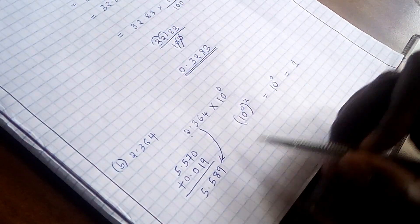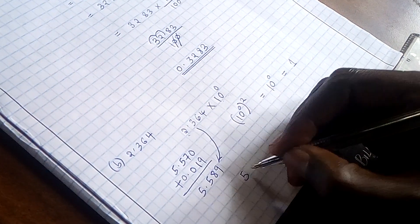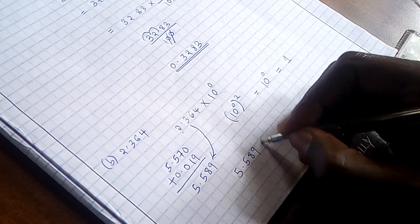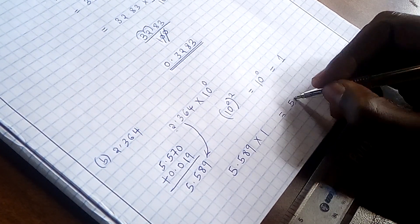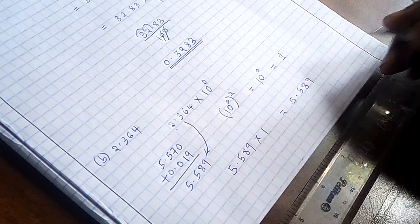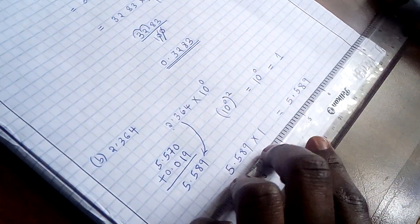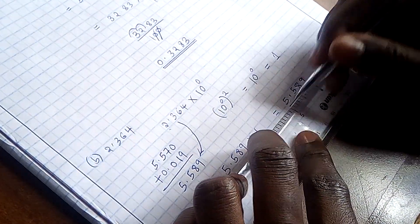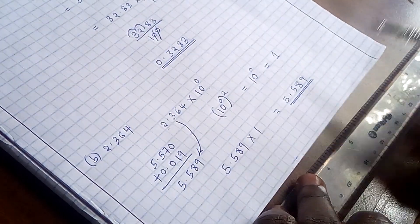So we are going to have this multiplied by 1. So we are going to have 5.589 multiplied by 1, and this is just 5.589. So this is the square of 2.364.